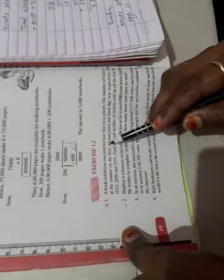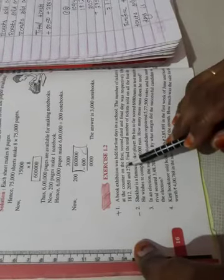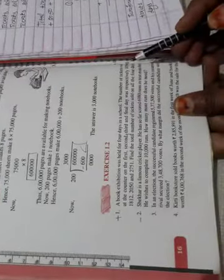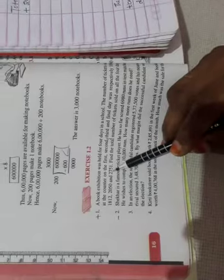Students, Exercise 1.2 Class 6 Number 1. A book exhibition was held for 4 days in a school. The number of tickets sold at the counter on the first day, second day, third and final day was respectively 1094, 1812, 2050 and 2751. Find the total number of tickets sold on all the 4 days.